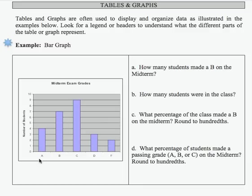So it looks like four students earned an A on the midterm, and seven students earned a B, and nine students earned a C, and three students earned a D, and two students earned an F.